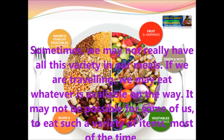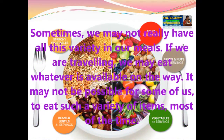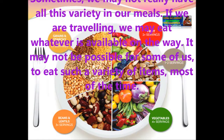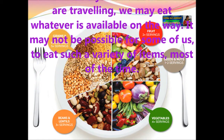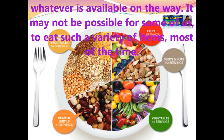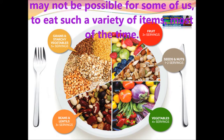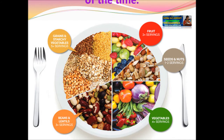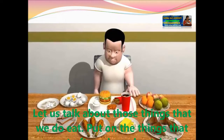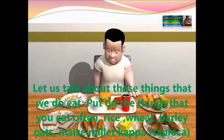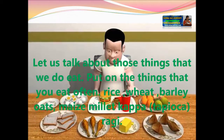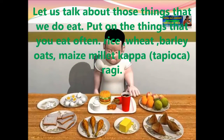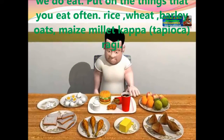Sometimes we may not really have all these varieties in our meals. If we are traveling, we may eat whatever is available on the way. It may not be possible for some of us to eat such a variety most of the time. Foods we eat often include rice, wheat, barley, oats, maize, milk, chapati, ragi, and so on.